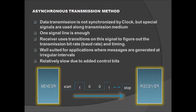The next is asynchronous transmission mode. Asynchronous transmission is not synchronized by a clock, but some special signals are used along the transmission medium. Only one signal line is enough and no clock signal is required. The receiver uses transitions on this signal to figure out the transmission timing. The most common asynchronous transmission uses start-stop signaling — before communication starts, it sends a transition to indicate transmission is ongoing.